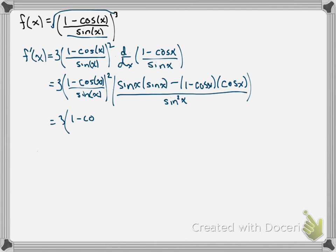So, one minus cosine of x squared over sine x. We have the derivative. We're just seeing if we can make this thing a little bit easier to deal with.